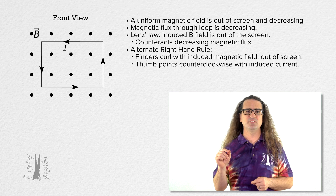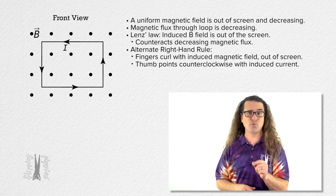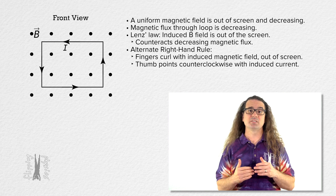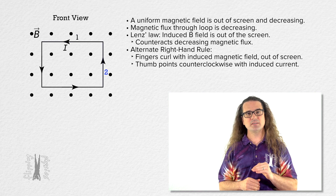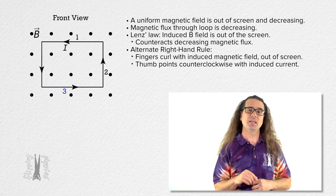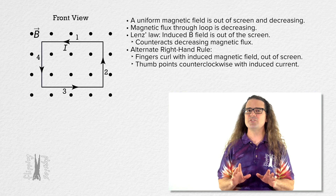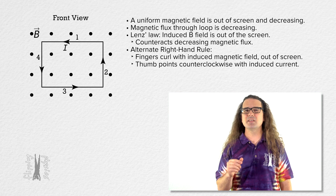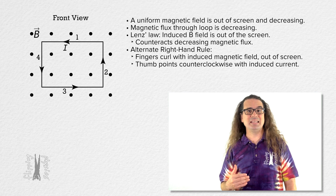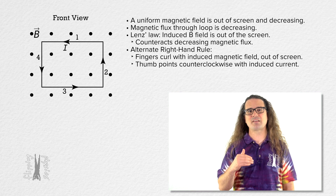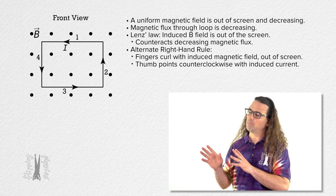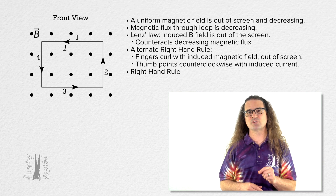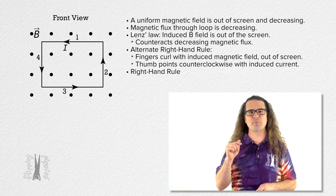Now, to talk about the induced magnetic forces on the induced current in all four sides of this rectangular conducting loop, let's give each side a number. Side one is on the top, side two is on the right, side three is on the bottom, and side four is on the left. Note that all four sides carry the same magnitude current — it is the induced current caused by the decreasing magnetic flux through the loop. Bo, please use the right-hand rule to determine the directions of the induced magnetic forces.